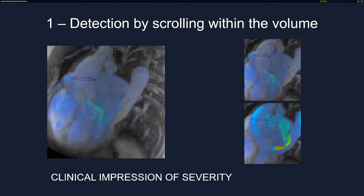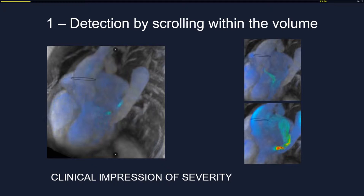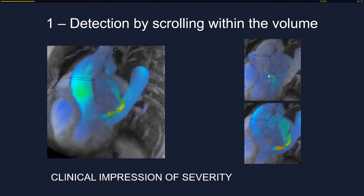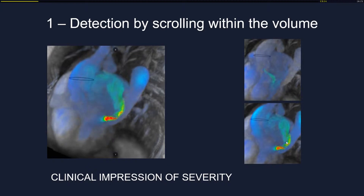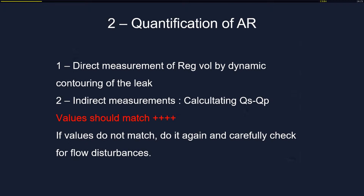The first step is to detect the leak. In this case you can easily see two leaks — one mitral and one aortic. The clinical impression of severity is already apparent: the aortic leak appears less important than the mitral leak, based on size and the high-velocity flow visualized in red. So the impression is that the mitral leak is more important, which was indeed confirmed.